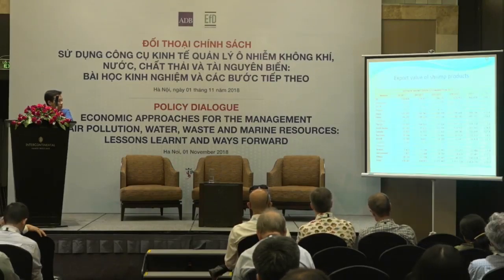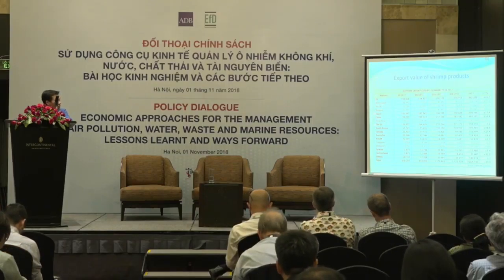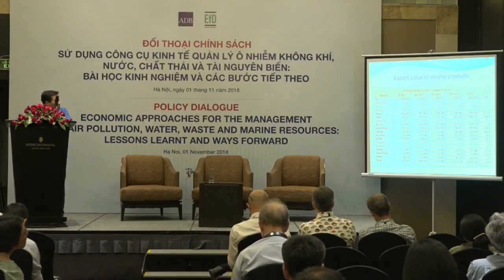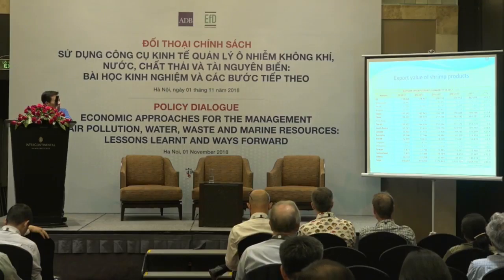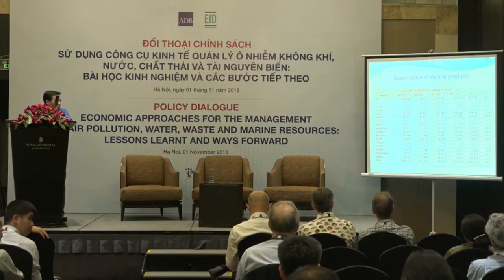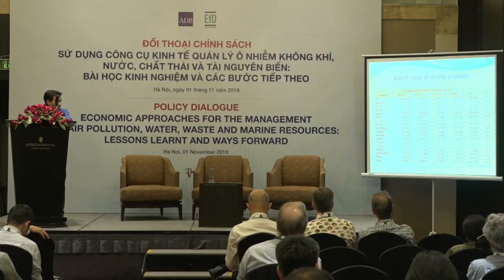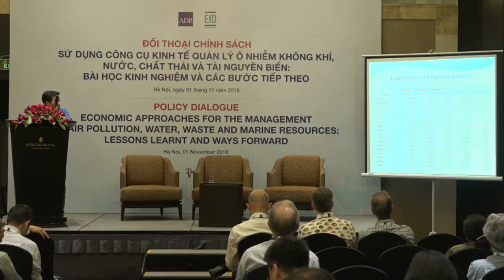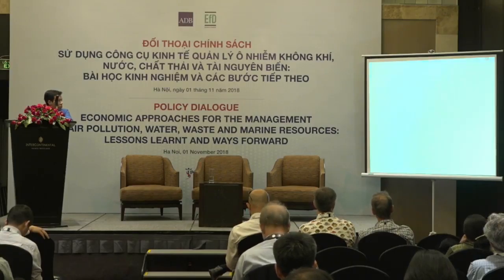Export for shrimp is very important. We export a lot to the European Union, Asian countries, China, and the US — those are the key export markets. The total export for shrimp is more than 3 billion, nearly 4 billion US dollars in 2017 — very, very high value. And for pangasius, the total export is more than 2 billion US dollars.